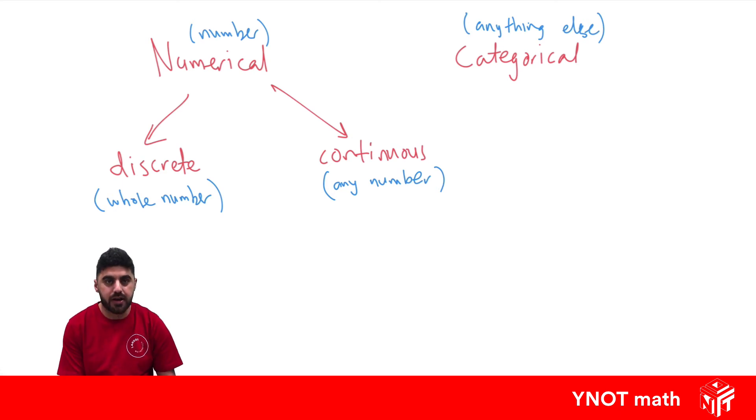Continuous numerical data might be something like your height. You could be 160.1 cm tall. You don't necessarily have to give an answer that's a whole number.